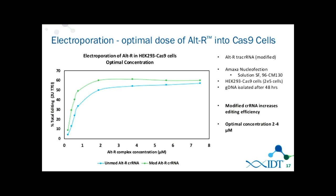With electroporation we can get the RNP into Jurkat cells with 90% editing efficiency. A dose response curve shows that with electroporation you need to use a lot more material — two to four micromolar of the complex in green, as opposed to 10 nanomolar with lipofection. At the 100 nanomolar range you don't see any editing. This also shows in green a modified version of the guide RNA compared to unmodified, demonstrating that in a less protected environment you do benefit from using a chemically modified complex.